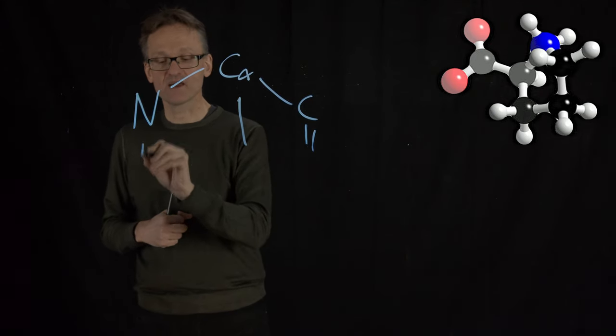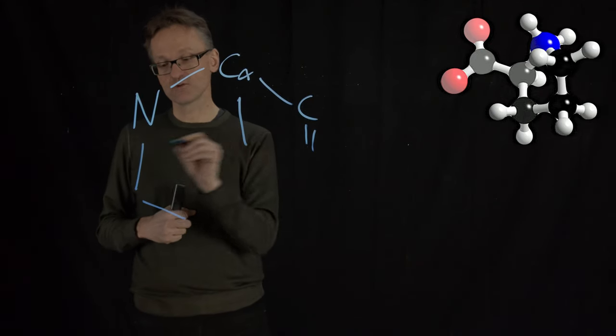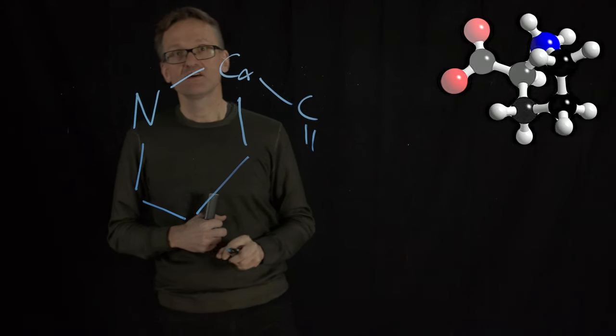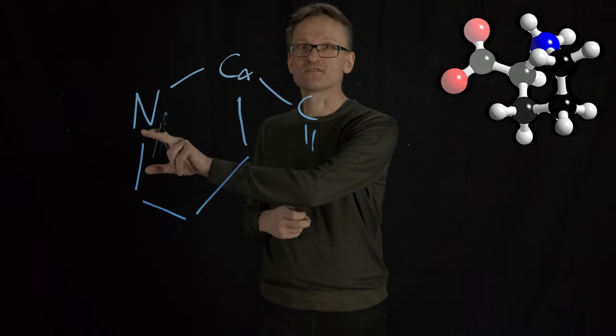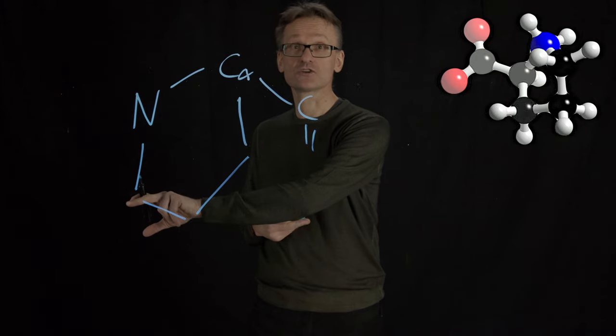But in proline, we have this five-membered ring—one, two, three, four, five. It's stolen the hydrogen. There is no hydrogen, but instead it's a large and bulky carbon.